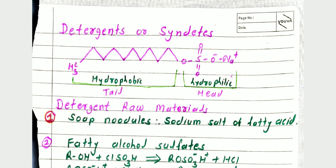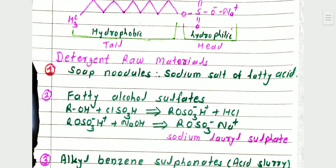Now we study the raw materials used for manufacture of detergents. There are seven raw materials. The first is soap noodles — soap noodles are the sodium salts of fatty acids.